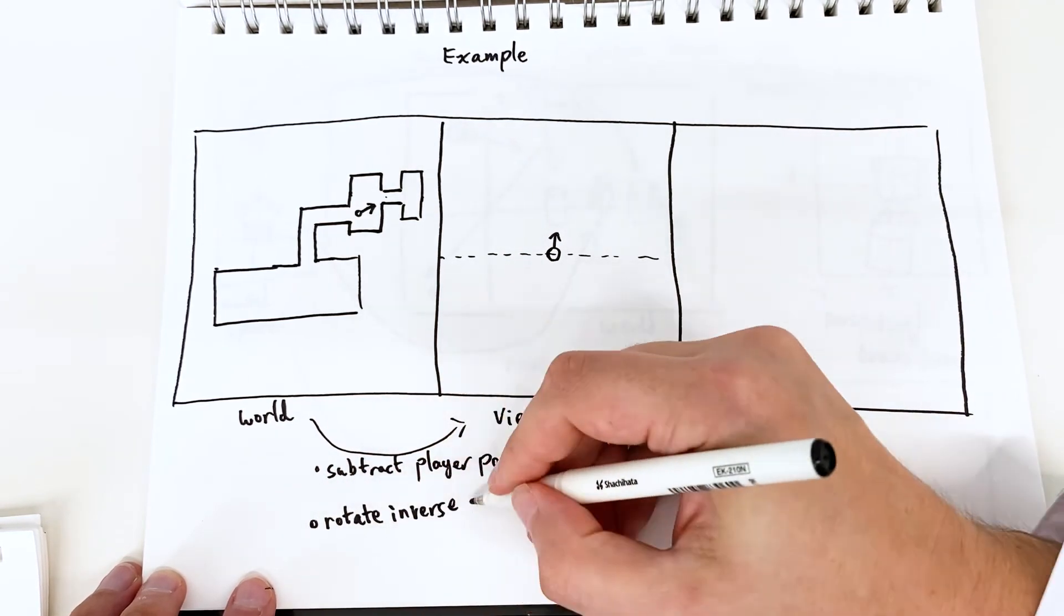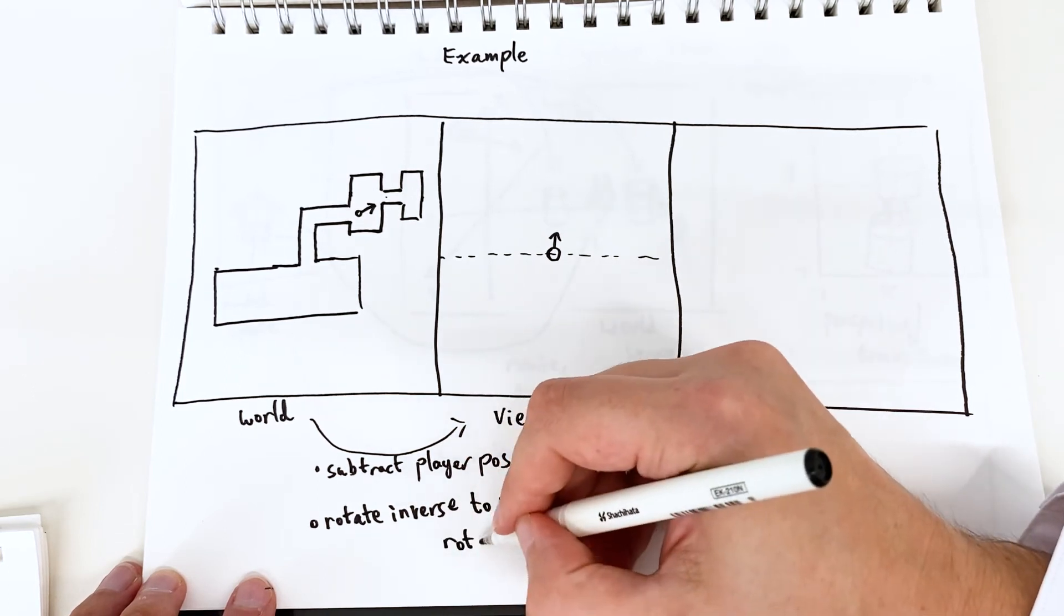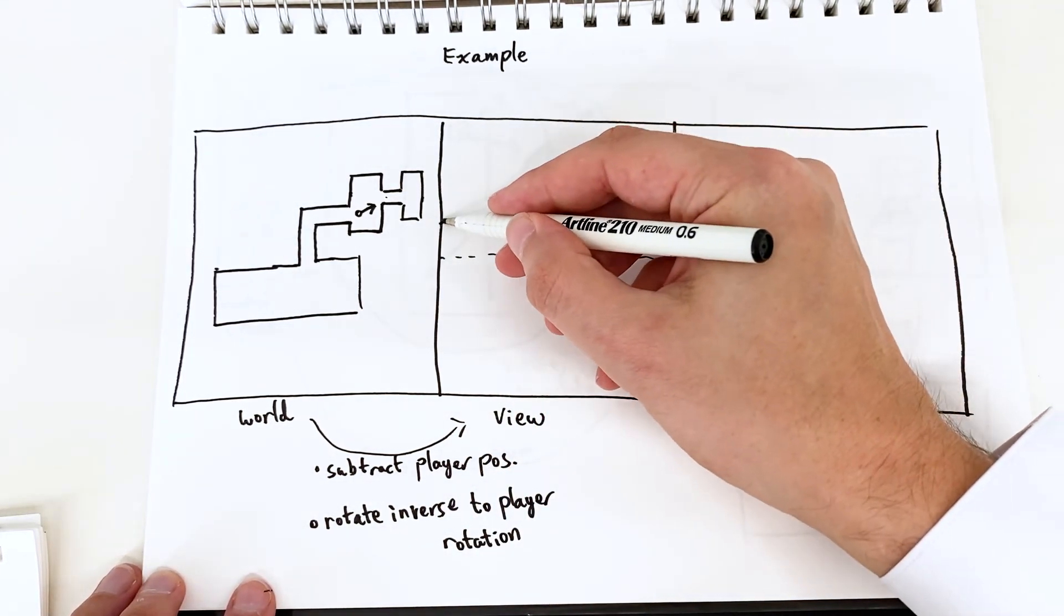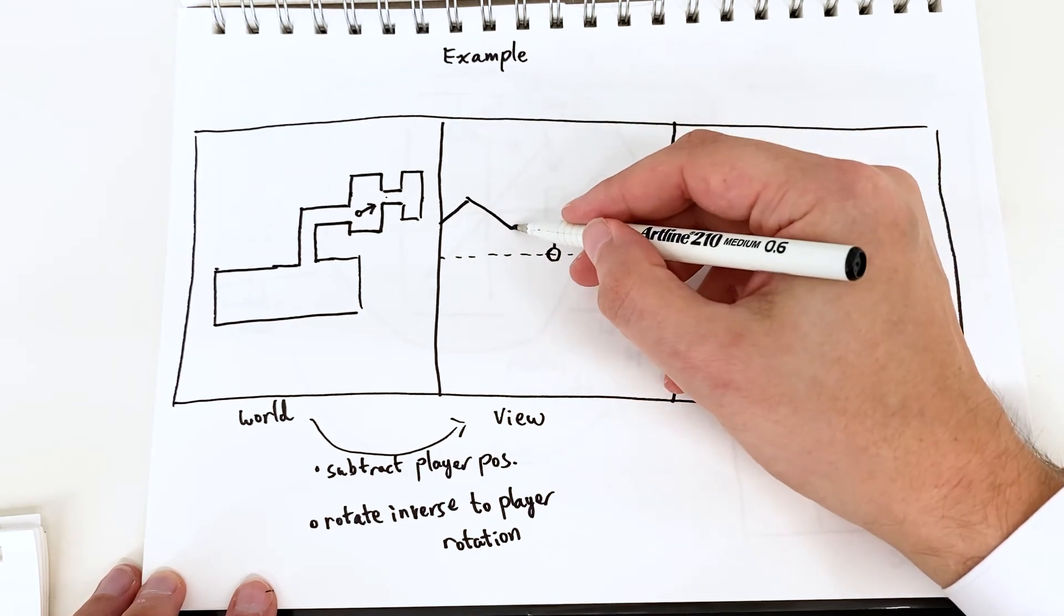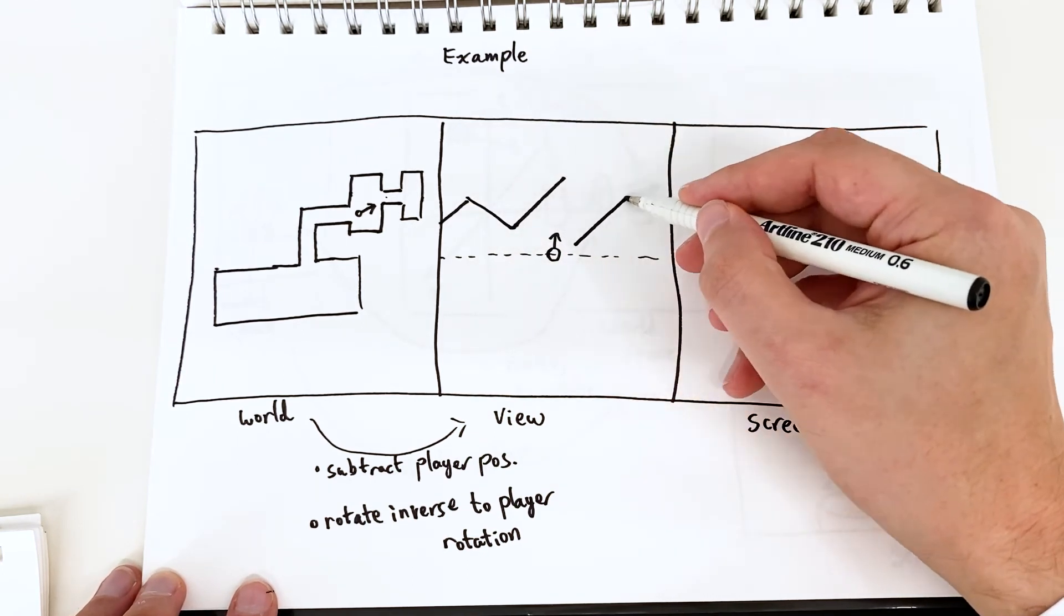We then need to rotate inverse to the player rotation. So if the player turns left then actually the player kind of stays still and the rest of the world spins right around the player.